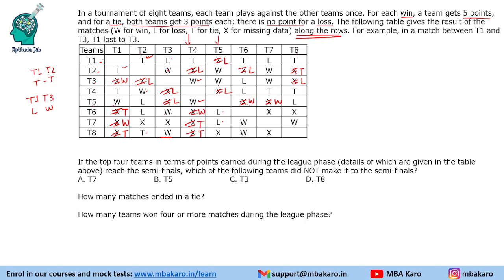Checking remaining X values: T6 has two X's, and looking at the T6 column we see two wins, so these become two losses. T7 has X's in the second and third positions — the T7 column shows win-win, so those become loss-loss. Finally, T8 versus T5 is X — the corresponding entry is L, so this becomes W. Another X where the column shows a win, so that becomes L. The table is now complete.